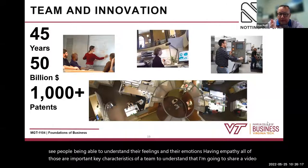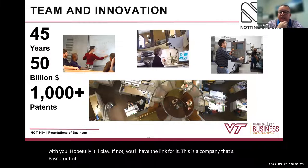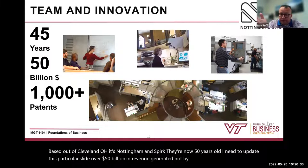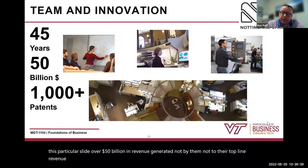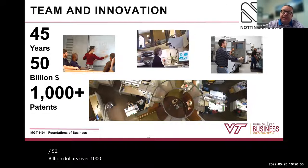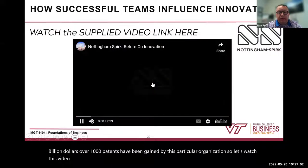I'm going to share a video with you. This is a company based out of Cleveland, Ohio — Nottingham and Spirk. They're now 50 years old, and over $50 billion in revenue has been generated by the organizations they've participated with and helped lead through their product and service collaboration and innovation. Over 1,000 patents have been gained by this particular organization. Let's watch this video and we can reflect on the other side of what it looks like.